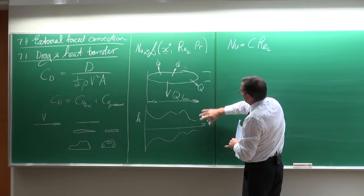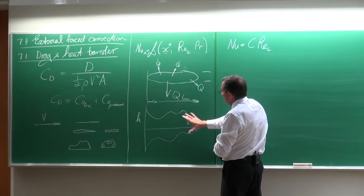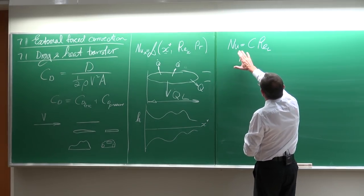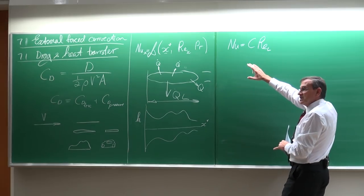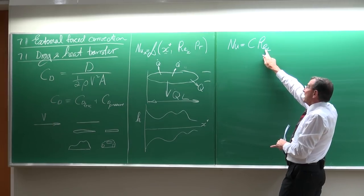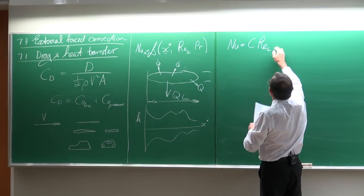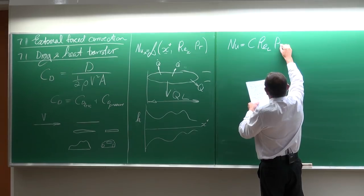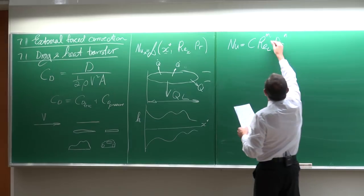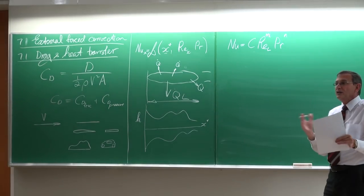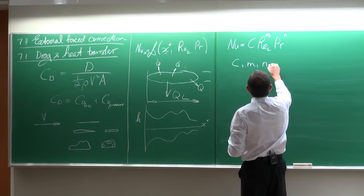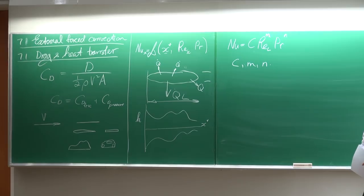Normally, people doing the experiments do all the hard work — they perform the integration — so that we end up with an equation of the form: Nusselt number equals C multiplied by the Reynolds number based on the length to the power M, multiplied by the Prandtl number to the power N. C, M, and N are the constants that typically vary and must be obtained from tables or graphs.